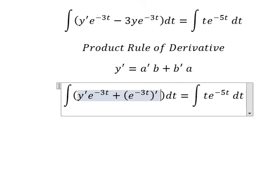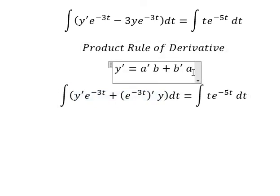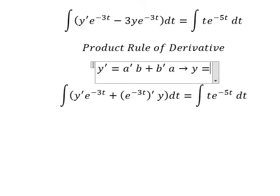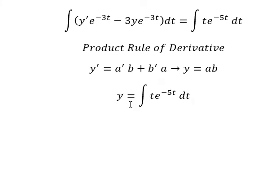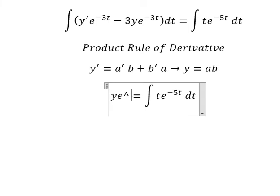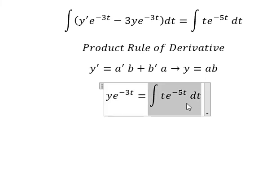Multiplied by a. So the integral of this gives us y equals a times b, so we have y·e to the power of negative 3t. Now we need to concentrate on this part on the right-hand side.